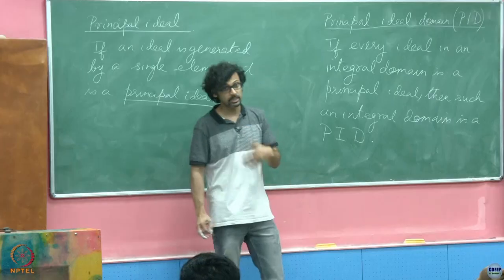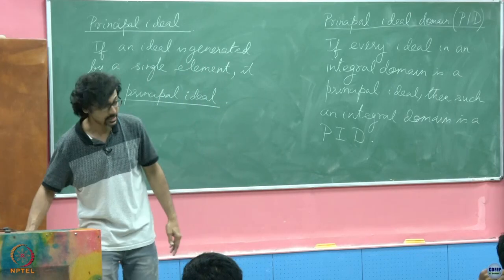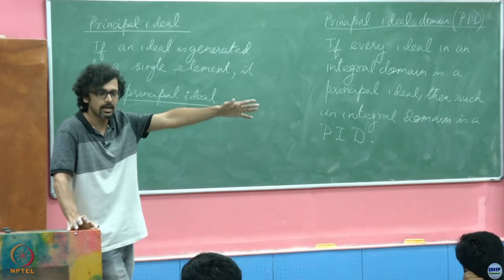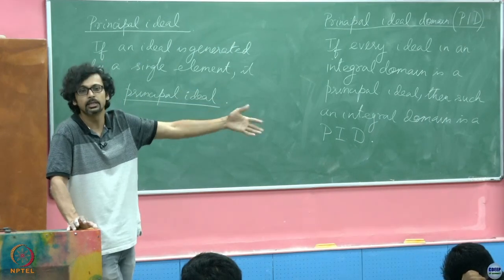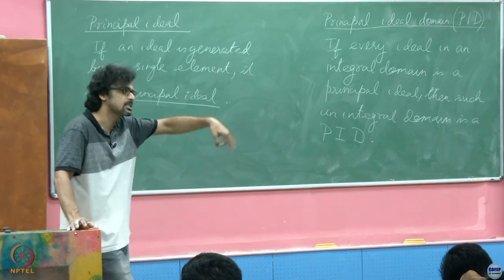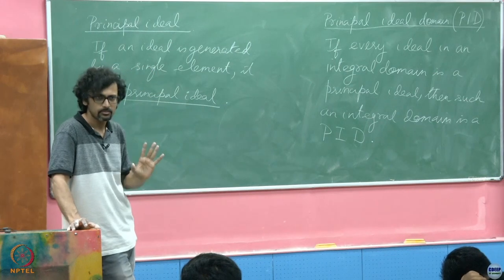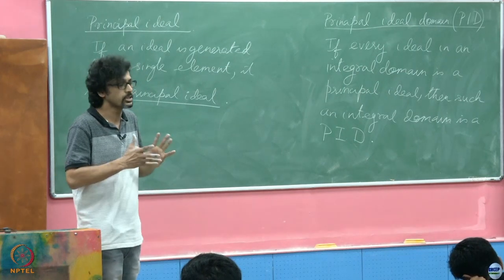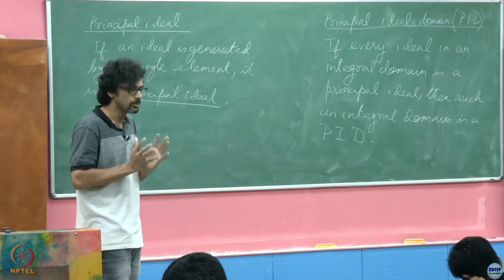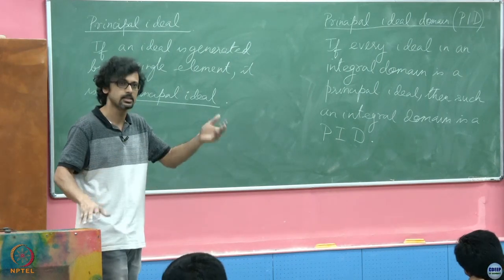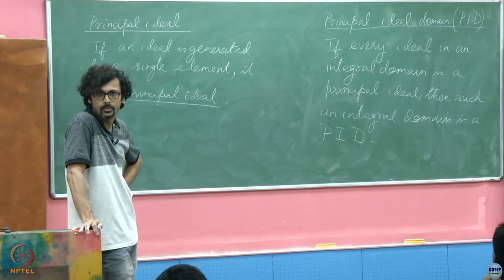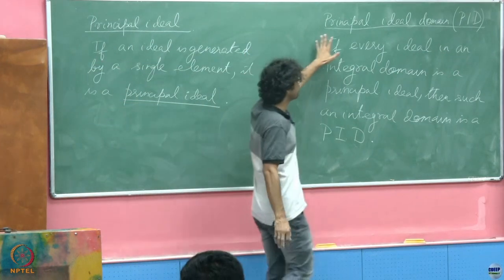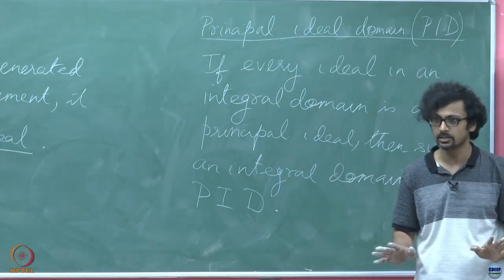You understand what this essentially implies: if you are living inside such an integral domain where every time I give you an ideal, you can tell me exactly which element generates it and nothing more or less — the entire subset inside that integral domain is characterized by just that one element. This is a desirable quality as it simplifies a lot of the successive steps we want to do with it.